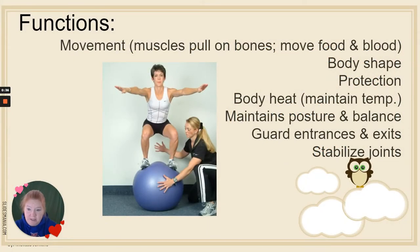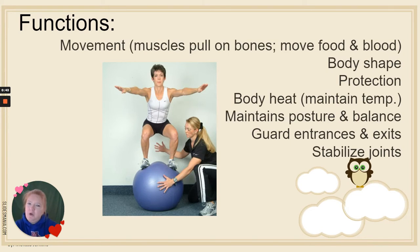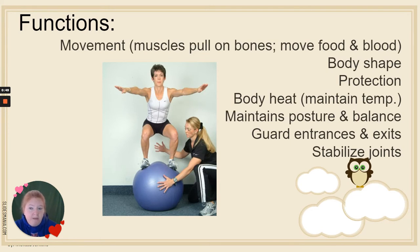Some functions of the muscular system — movement is what everyone usually thinks of. Muscles pull on bones and it allows us to move. But muscles also move our food and blood — that would be smooth muscles.